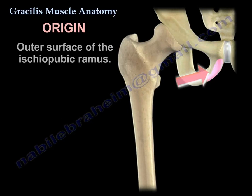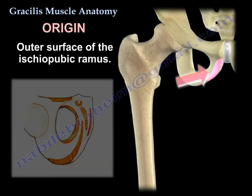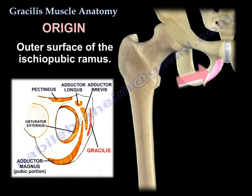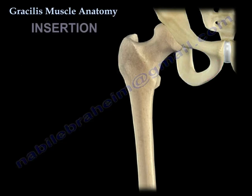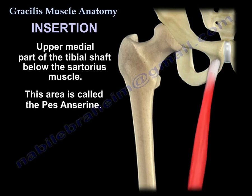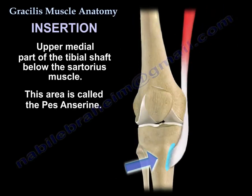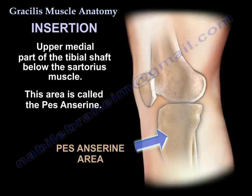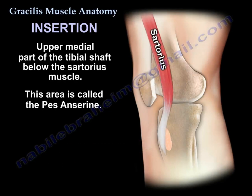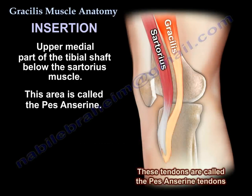Origin is from the outer surface of the ischiopubic ramus. Insertion is the upper medial part of the tibial shaft below the sartorius. This area is called the pes anserinus, where you will find the sartorius, the gracilis, and the semitendinosus.